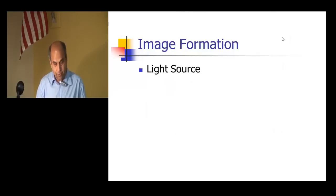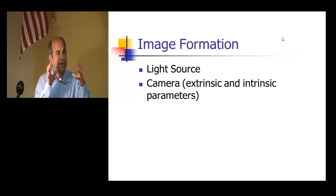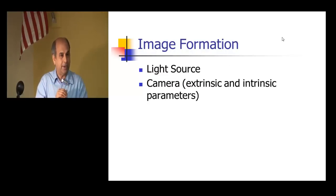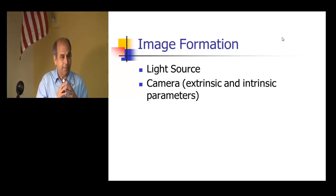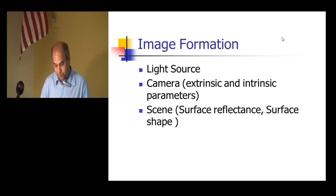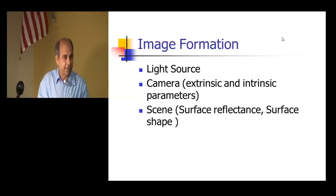One factor is the light source. The other is the location of the camera — the location and orientation — which are called extrinsic parameters of the camera. Then there are intrinsic parameters of the camera, like focal length. The picture will depend on both the camera and what the scene looks like.